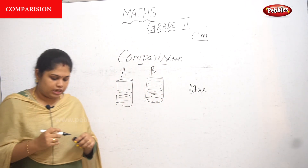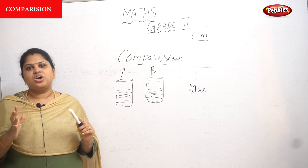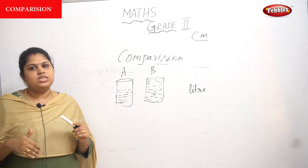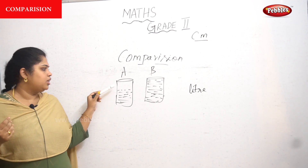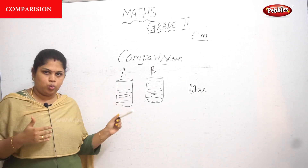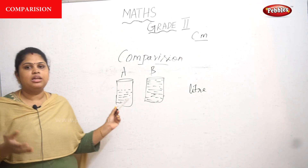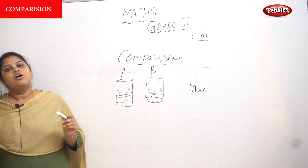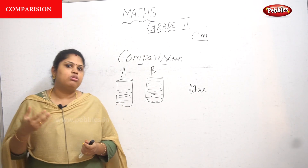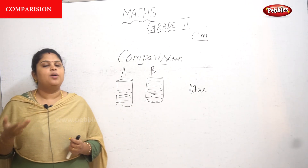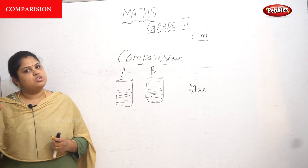We cannot measure water using a centimeter scale. Using liters, we can calculate whether it's one liter, two liters, or five liters. Using liters, we can compare any liquid substances — for example, water, oil, or petroleum can all be measured in liters.